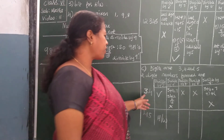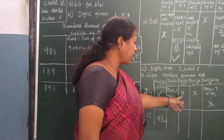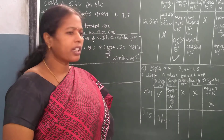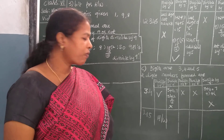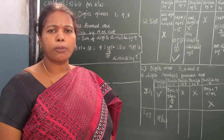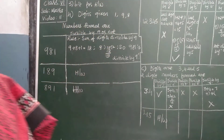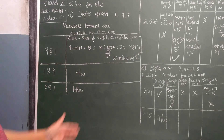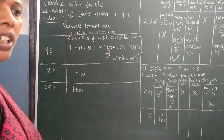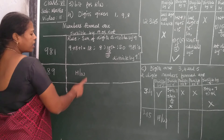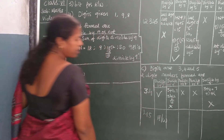So children, 34 is divisible by 2, not divisible by 3, not divisible by 5, not divisible by 6, and not divisible by 9. Using the same method, you should do 45 in your homework book. Please don't write homework in the classwork book — write it neatly in the homework book. That's all for today. Thank you.